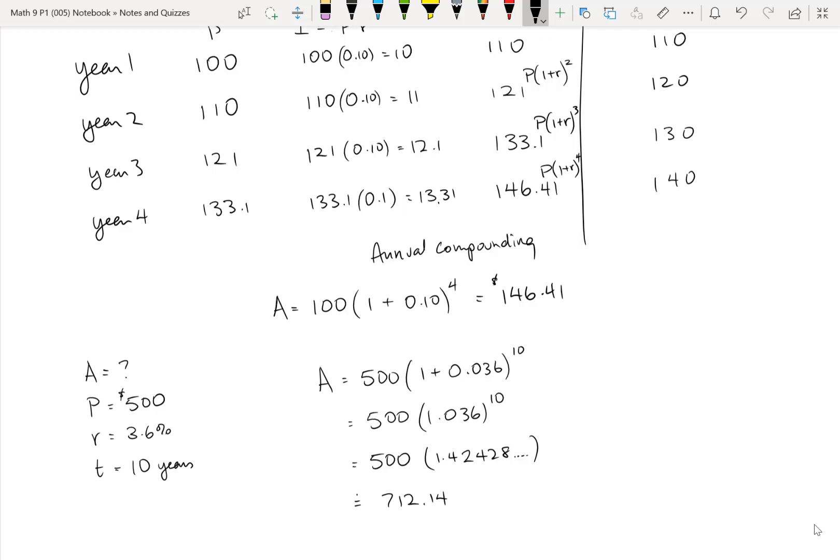Now, this is really a very useful formula and can be used for a lot of other things other than just putting money into an account. Without any modifications at all, you can use this to estimate the effects of inflation. So every year, for the most part, prices increase. And we could change this example to be one of trying to figure out what the price of something is going to be after 10 years, assuming the inflation rate is 3.6 percent every year. And if we have an item that's $500 today, how much is it going to be in 10 years? And so the equations, everything would be identical. So after 10 years of 3.6 percent inflation, the price would be $712.14.